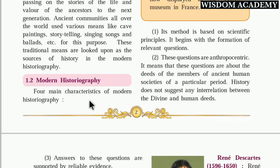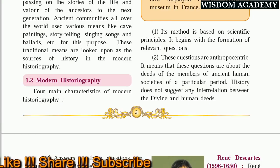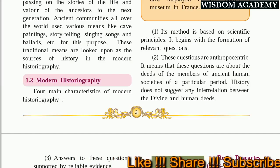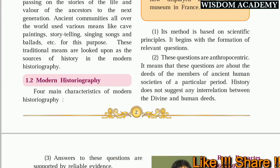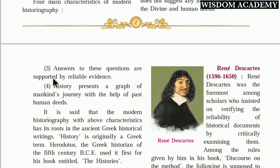History does not suggest any interrelation between divine and human needs. When we read ancient history, stories mention that events happened because of God or divine power, or that kings had divine power representing God. But in modern scientific history, there is no relation between human deeds and divine power. In modern scientific thinking, we do not accept anything until it is scientifically proven.